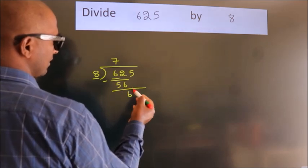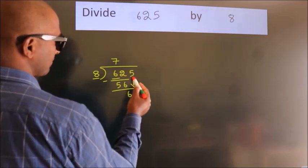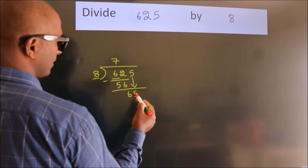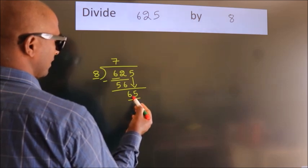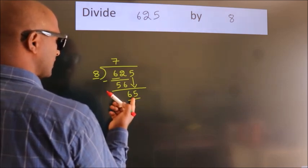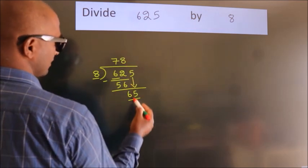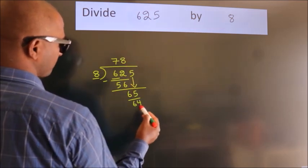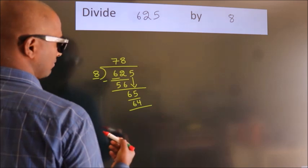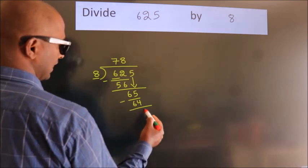After this, bring down the beside number. So, 5 down. So, 65. A number close to 65 in 8 table is 8 8s, 64. Now, we subtract. We get 1.